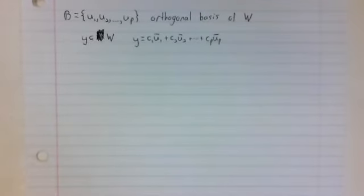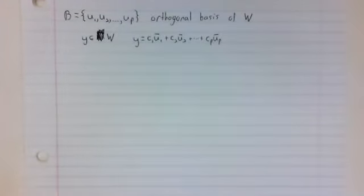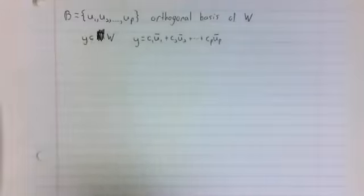Ordinarily, if you want to find these coefficients, c1 to cp, you would do so using Gauss-Jordan elimination. However, the basis being orthogonal actually gives us an explicit formula for these coefficients in terms of the dot product.